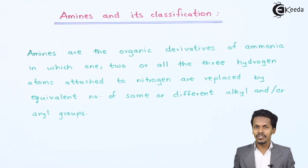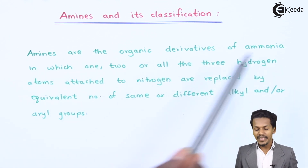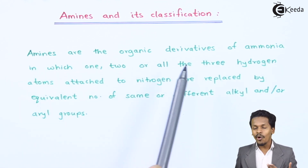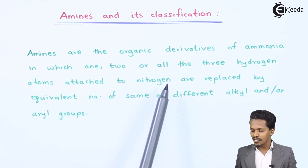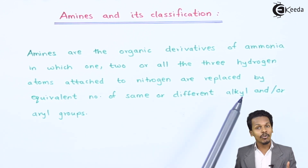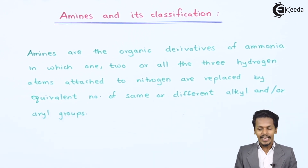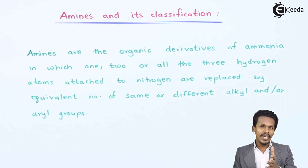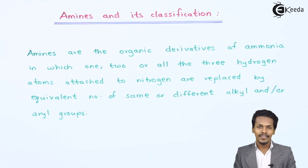In this topic let us understand the definition of amines first. Amines are the organic derivatives of ammonia in which one, two, or all three hydrogen atoms attached to the nitrogen are replaced by an equivalent number of same or different alkyl and/or aryl groups. Let me give you an example so it will be easy to understand amines clearly.